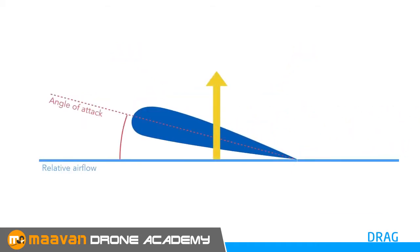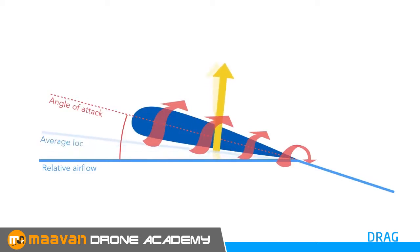At high angles of attack, the high pressure air below the wing likes to swirl around the wing tip towards the low pressure air above the wing. A twisting vortex of air forms behind the wing, deflecting the airflow downwards. An inclined local airflow is created, which is the average of relative airflow and the deflected airflow, resulting in the lift vector tilting backwards and contributing to total drag.